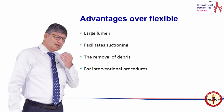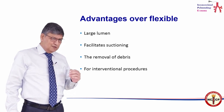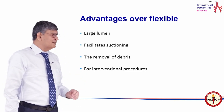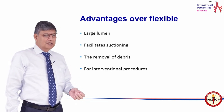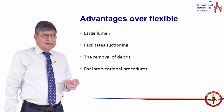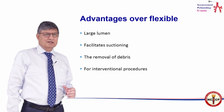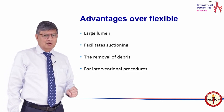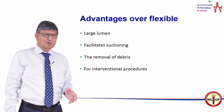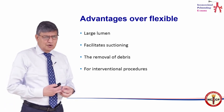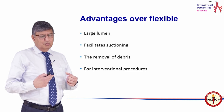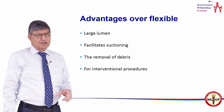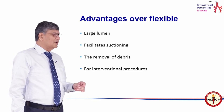So, the advantages over a flexible bronchoscope are that it has a large lumen, it has got excellent optics, and you can remove all the debris and a huge quantity of that. The main advantage probably is that the sharp edges of the bronchoscope at the tip facilitate coring, which would be to your advantage if you have to core through a tumor as an emergency to create an airway.